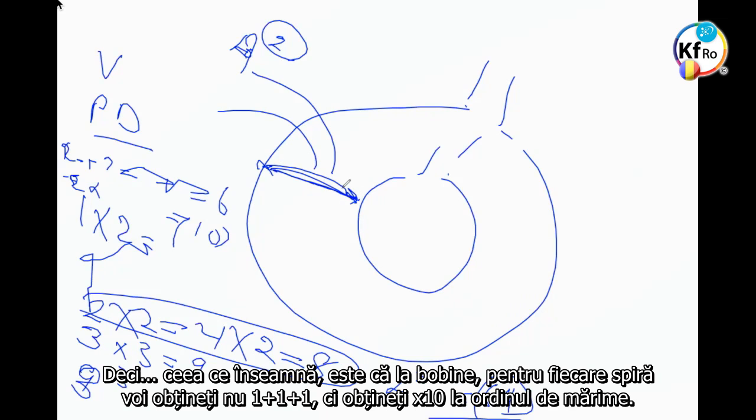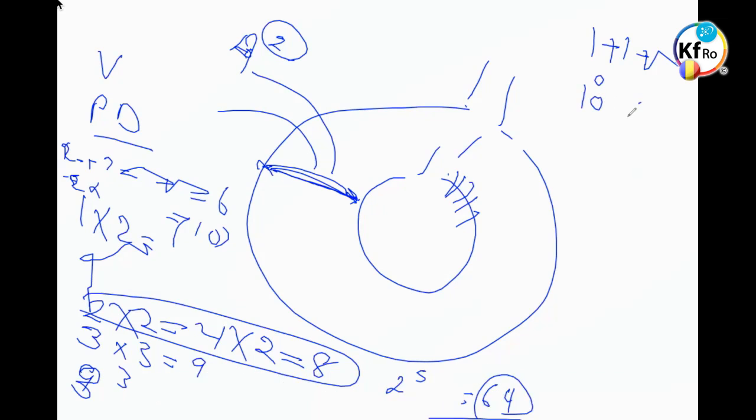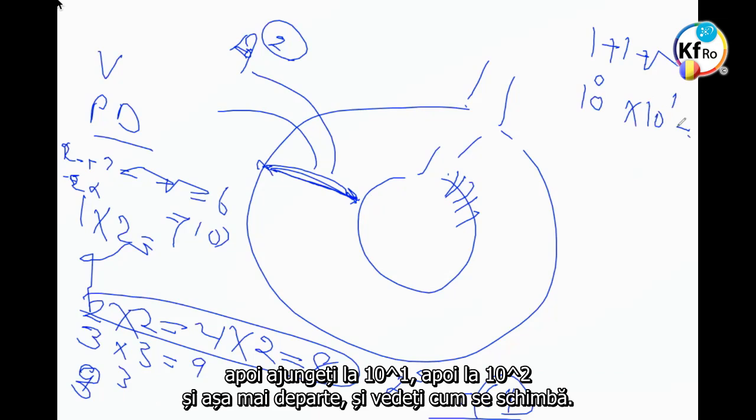So what it means, in the coils for every turn you go up, not one plus one plus one - you go by order of magnitude, by ten. Then you go ten to the power of one, then ten to the power of two, and the rest of it. And you see how it changes.